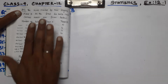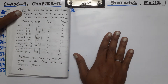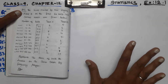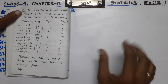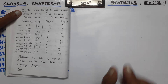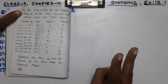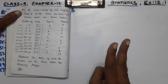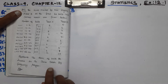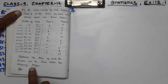We are going to talk about this frequency polygon graph. There are three types of graphs: 1) bar graph, 2) histogram, and 3) frequency polygon. What I like to explain is how you can get the frequency polygon.